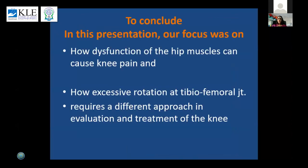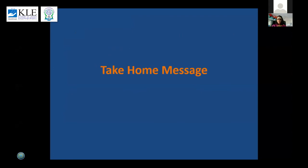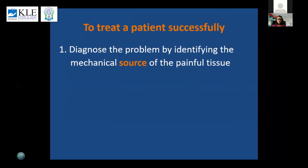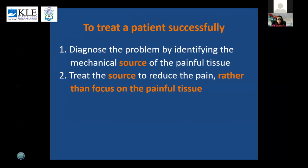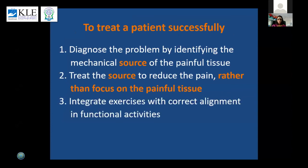In conclusion, this presentation focused on how dysfunction of the hip muscles can cause knee pain and how excessive rotation at the tibiofemoral joint requires a different approach in evaluation and treatment. The take-home message is: diagnose the source of the painful tissue, treat the source and not just the painful tissue — the moment we treat the source, pain reduces in the painful tissue. It is extremely important to integrate exercises with correct alignment in all functional activities, as we did with Alka.